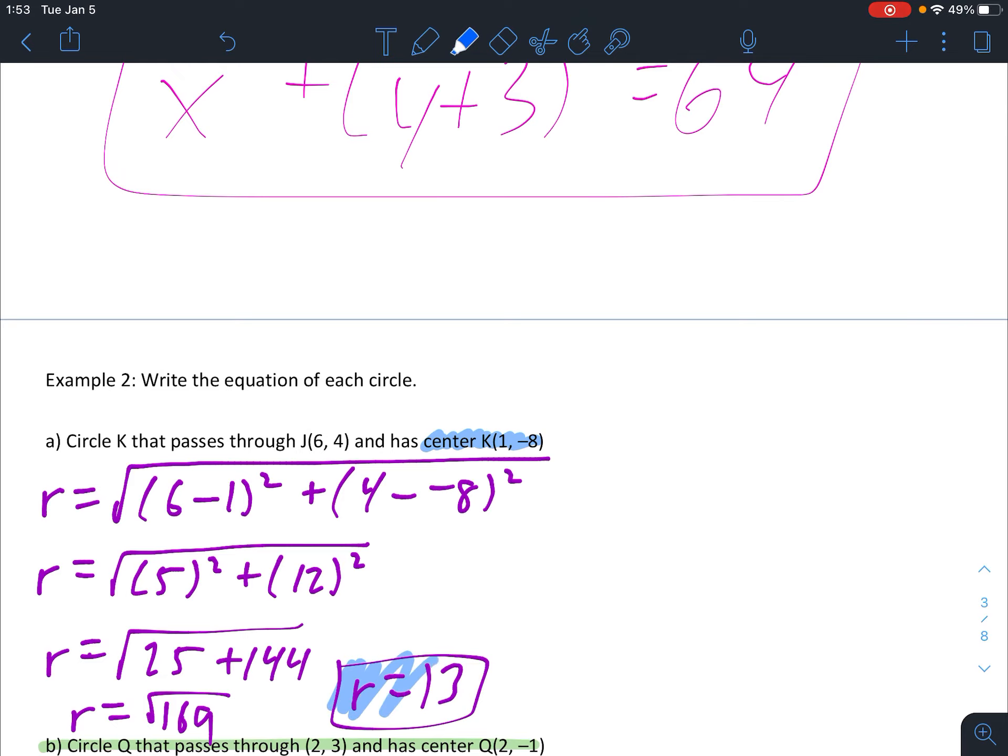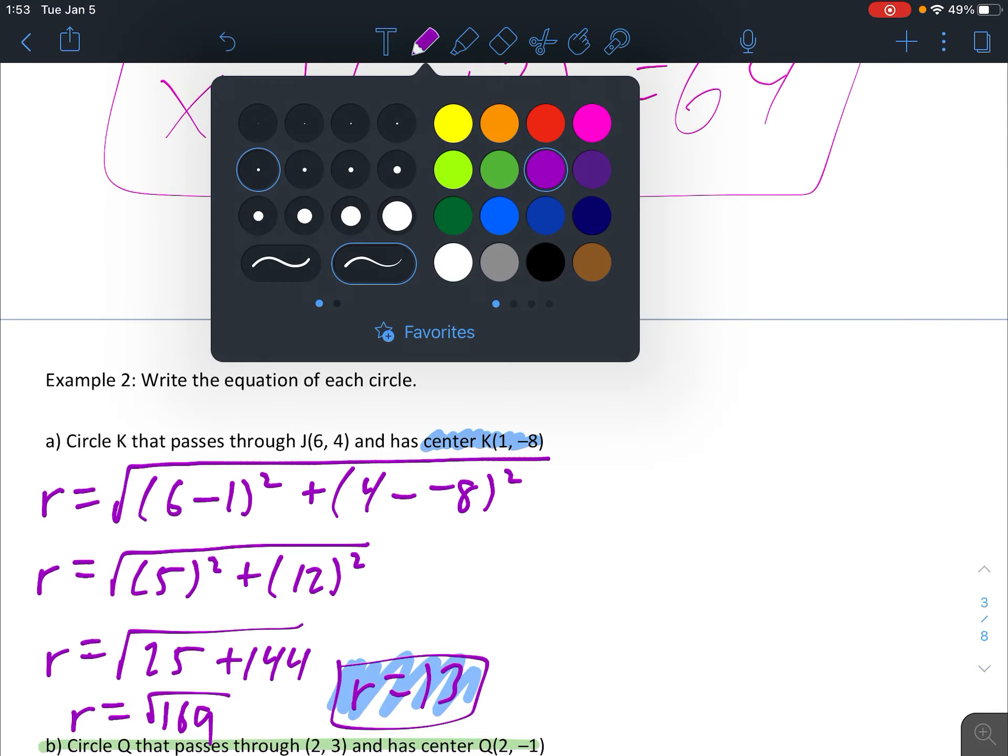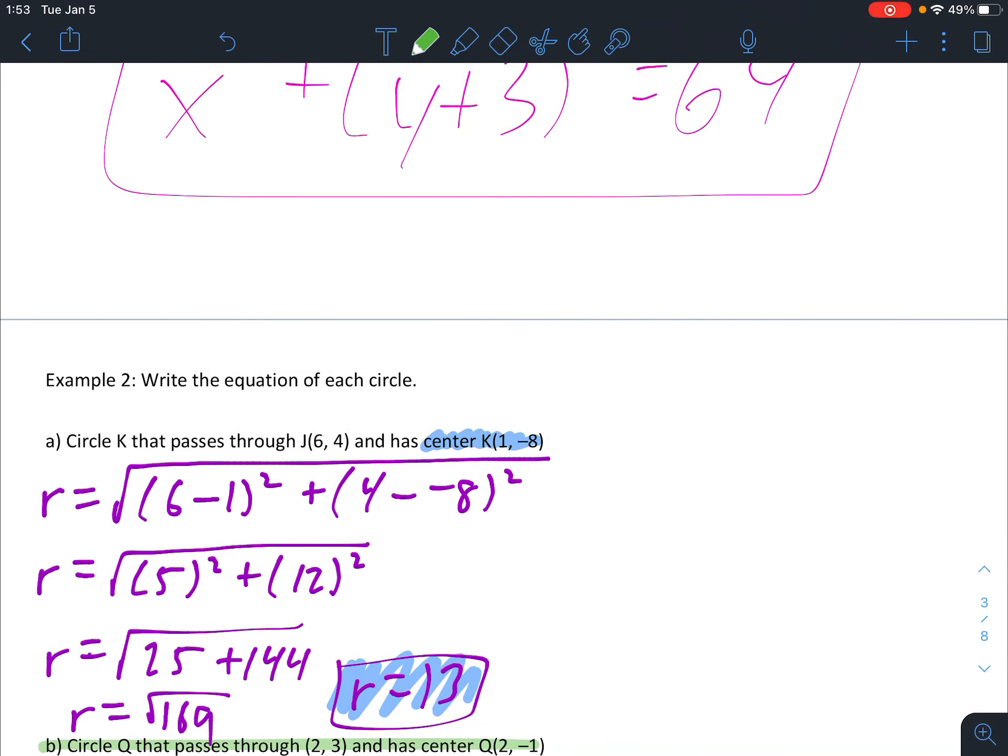So now we have our center. We have a radius. We can put these right into our equation for a circle. So remember for the equation circle, it's x minus the x coordinate of the center squared plus y minus the y coordinate of the center squared equals radius squared. Cleaning that up, we get x minus 1 squared plus y plus 8 squared equals 169.